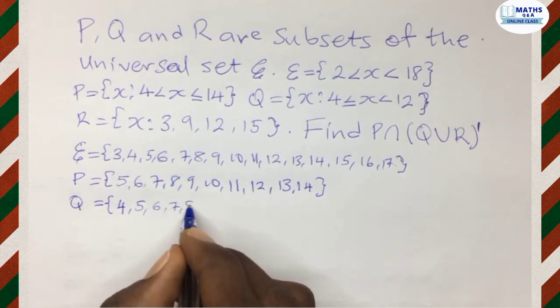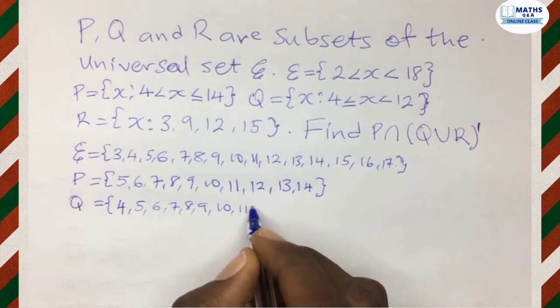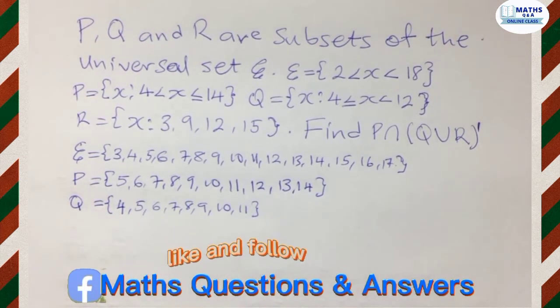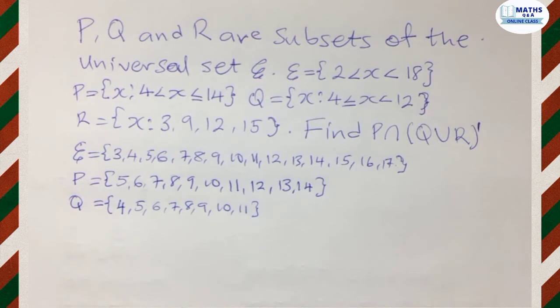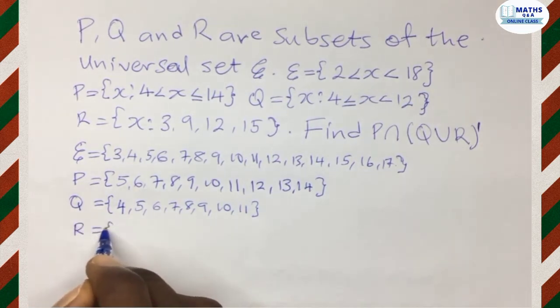so we start them from 4. x is less than 12. So 7, 8, 9, 10 and then 11 because 11 is less than 12. So those are the elements for Q. And the last one R. R is already given. Okay.